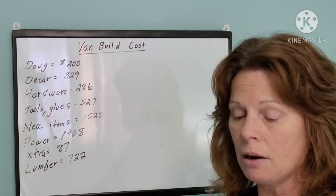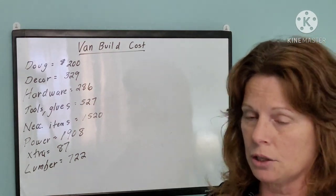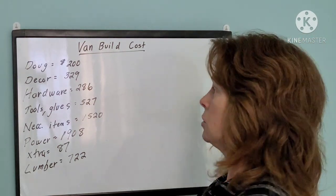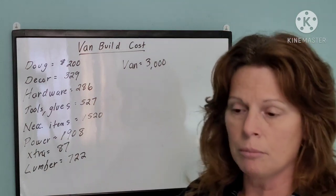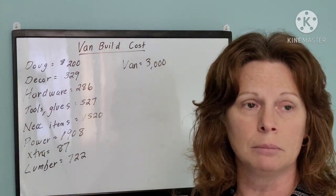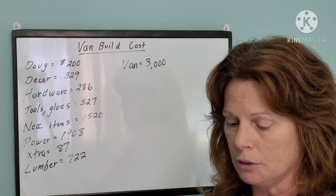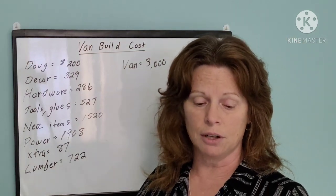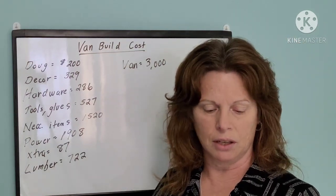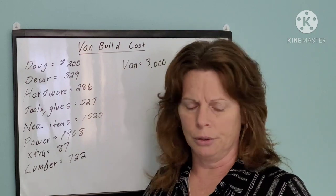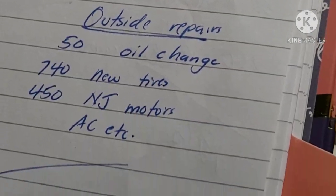So that's like the build part. So now I want to talk to you about, so the van itself cost $3,000. And it needed some repairs that Doug and I couldn't do, so we had to take it to a mechanic. And we also needed new tires. The tires were $740, so that was a big chunk of it. We needed the AC fix and an oil change. So all that came to $1,240.